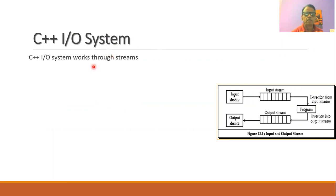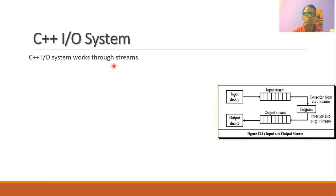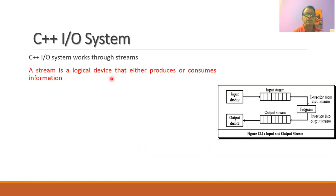In C++ programming language there is a necessity that we always need to perform certain input and output operations. Whenever we want to read some data from the input device or write some data to the output device, there is a system that works through a stream. As shown in this diagram, the input device is connected to a logical device called the input stream, and from the input stream the data can be extracted by the program. When the program wants to write data, it is sent to the output stream, from which it reaches the output device. A stream is a logical device that will either produce or consume information or data.